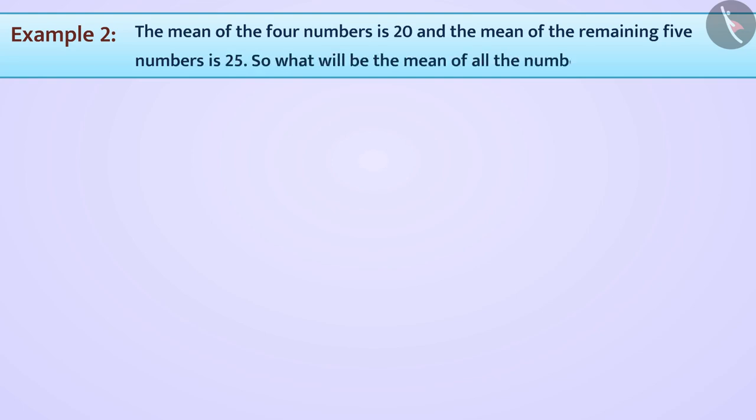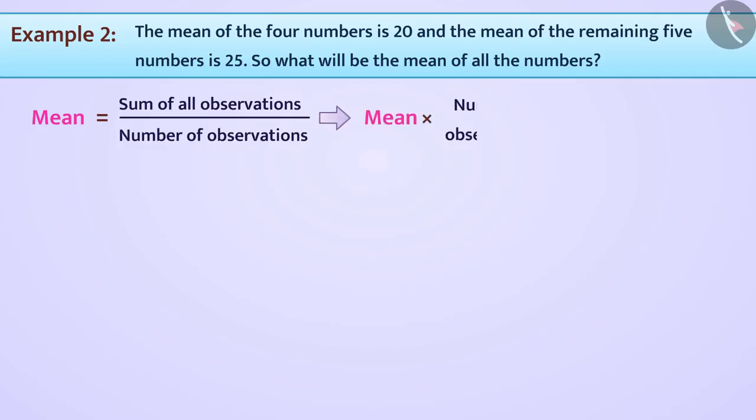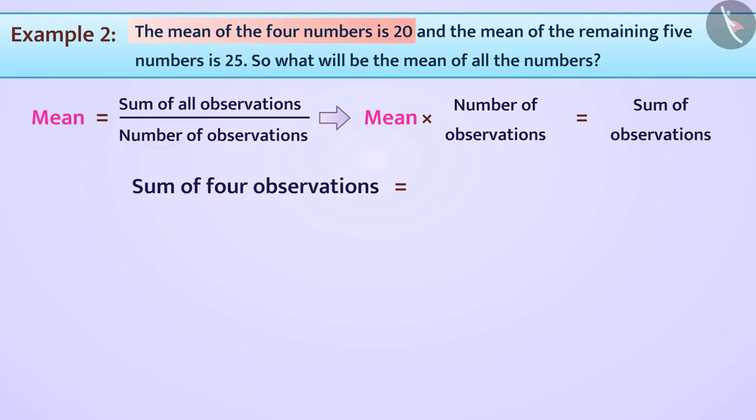Friends, we know that mean is equal to sum of all observations divided by number of observations. We can also say that mean into number of observations is equal to sum of all observations. Considering this formula, sum of 4 observations is equal to 20 multiplied by 4 is equal to 80. Sum of 5 observations is equal to 25 multiplied by 5 is equal to 125.